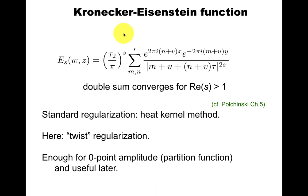This double-sum only converges absolutely for real part of s greater than 1. The standard way to regularize is the heat kernel method. Here we'll use a slightly less common method, which I can call the twist regularization. This regularization is sufficient for the zero-point amplitude, the partition function, but it's also useful for amplitudes, as we'll see.